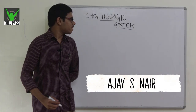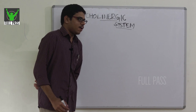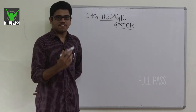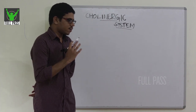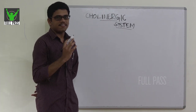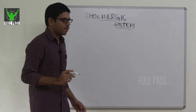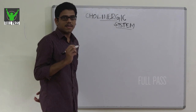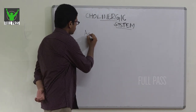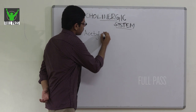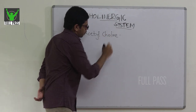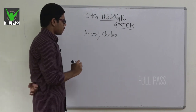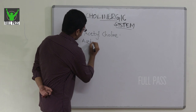The topic of discussion for today is the cholinergic system. The cholinergic system is a type of autonomic nervous system in which the neurotransmitter is acetylcholine — that is why it is called the cholinergic system. In the cholinergic system, the major neurotransmitter is acetylcholine, which is obtained from acetyl coenzyme A and choline.